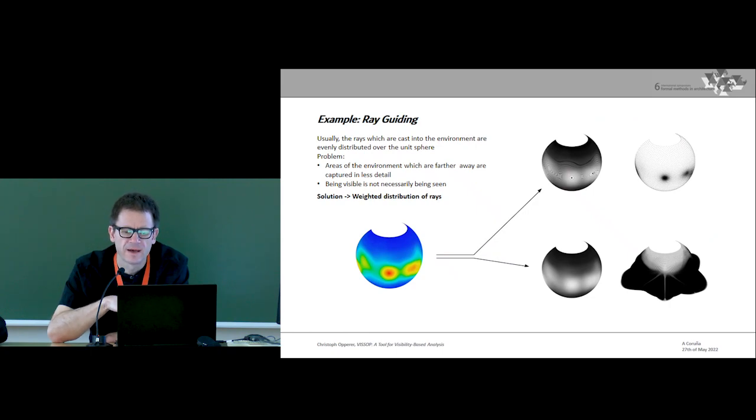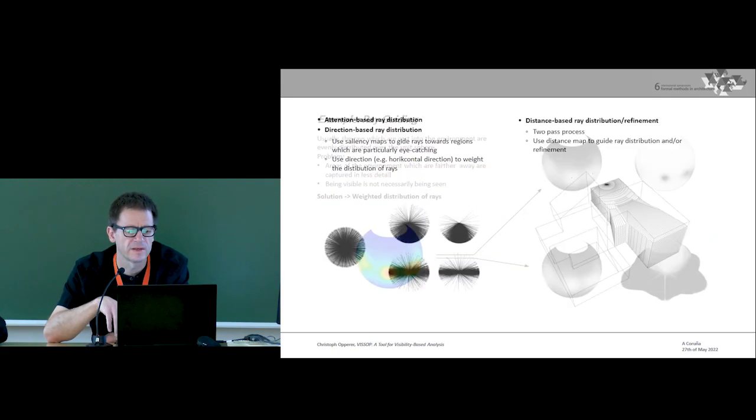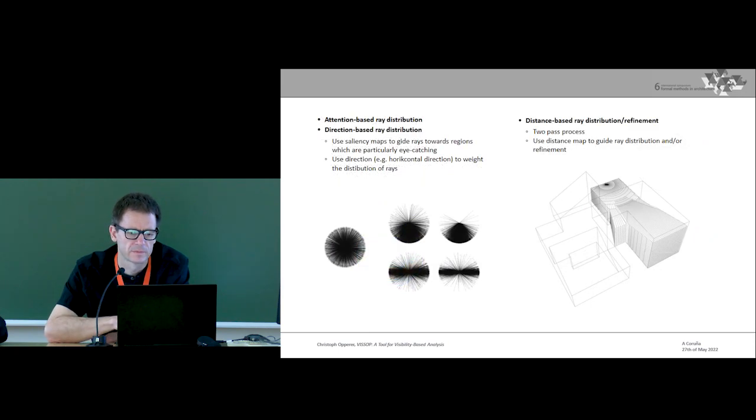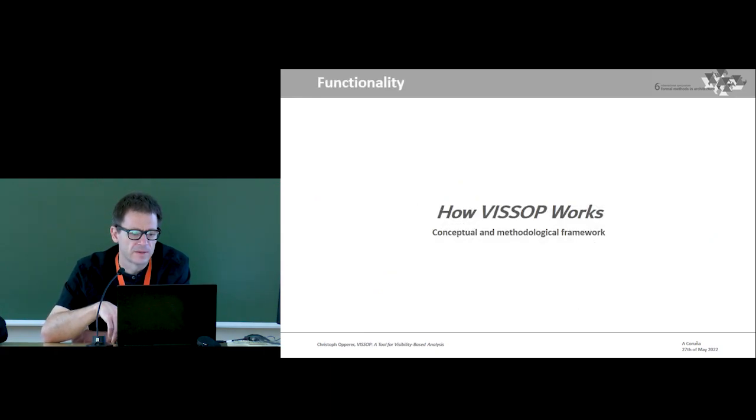Another example is ray guiding, which I'm going to skip, but it's a very similar approach to the one described before, which could be used for guiding the direction and distribution of rays for generating ISOVIST. Rays can also simply be weighted horizontally, for example, since the horizontal and vertical dimension is typically perceived differently. Another example is on the right, which is a three-dimensional ISOVIST and should be an animation, where the ISOVIST gets refined in specific directions to compensate regions which are farther away.